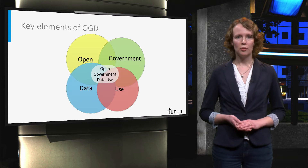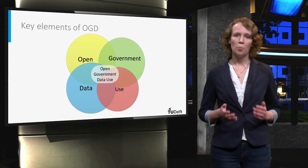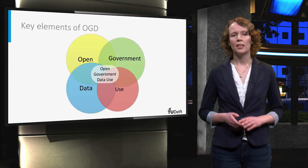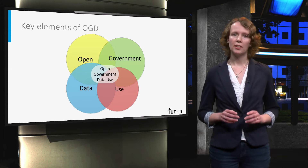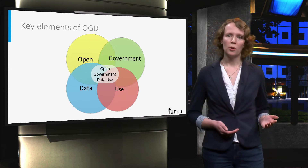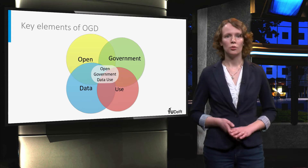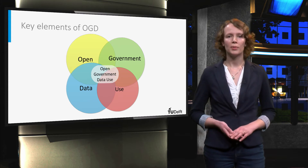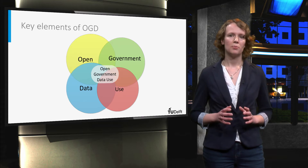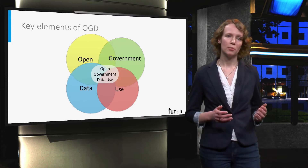So the combination of these four elements — openness, government, data, and usability — is what we focus on in this part of our course. Although there are more elements to an open government, the release and use of open government data is an important element, since this may provide insight into what the government is doing.